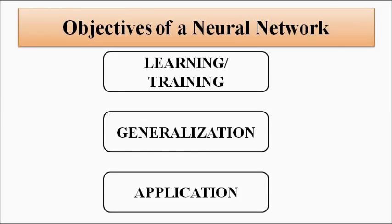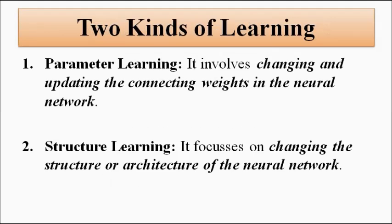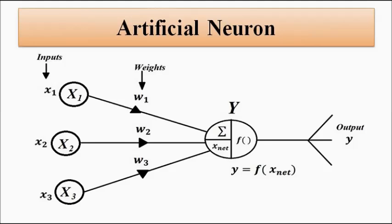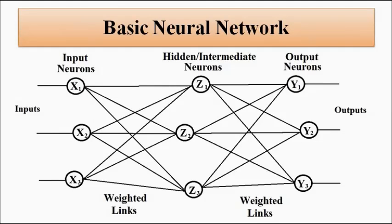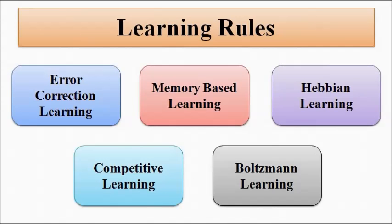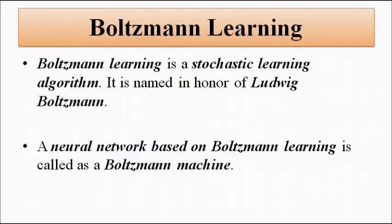The change that can happen to a neural network because of learning can occur in two ways: first is a change in the weights — parameter-based learning or weight updation — or it can happen as a change in the overall structure of the neural network. Boltzmann learning is a stochastic learning algorithm named after Ludwig Boltzmann.